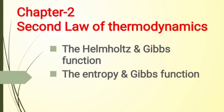The equality in the Clausius inequality is satisfied only for a reversible process. Helmholtz free energy is defined as A equals U minus TS, where A represents Helmholtz free energy, U is internal energy, T is temperature, and S is entropy.